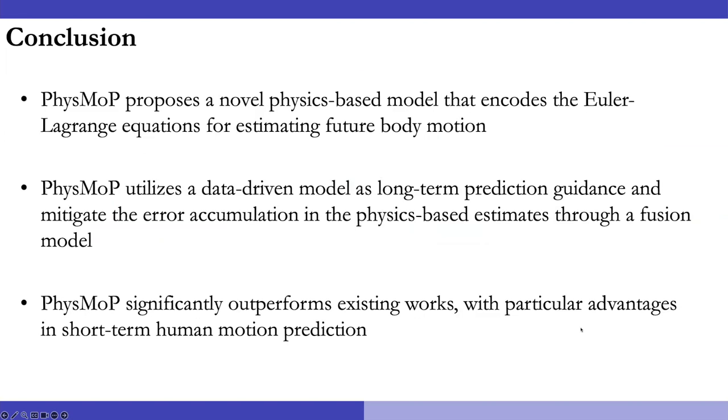In summary, PhysMoP proposes a novel physics-based model that encodes the Euler-Lagrange equations for estimating future body motion. PhysMoP utilizes a data-driven model as long-term prediction guidance and mitigates the error accumulation in the physics-based estimates through a fusion model. Lastly, PhysMoP significantly outperforms existing works with particular advantages in short-term human motion prediction.